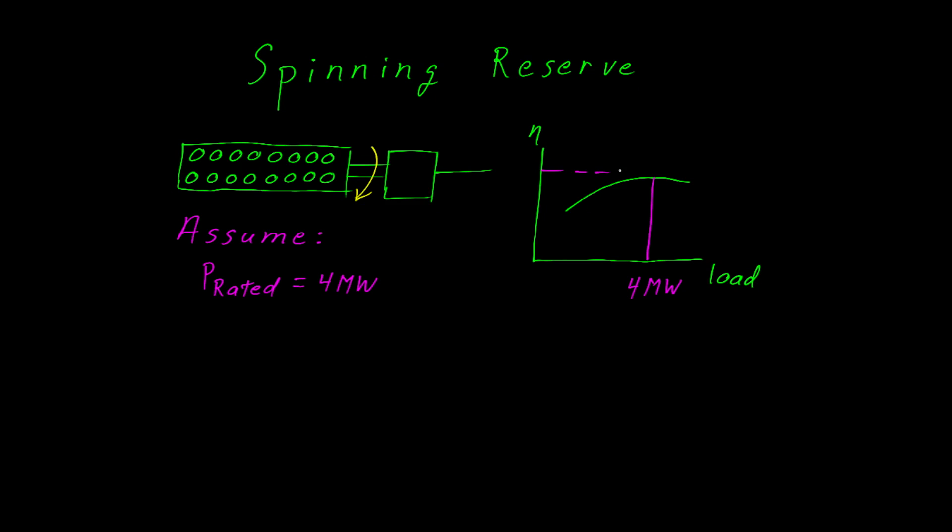Now, the generator doesn't need to run at rated capacity. It could run at something lower, as shown here in yellow. Or for a short period of time, it could be overloaded. But either way, when you're operating at rated power, you'll have the most efficiency.